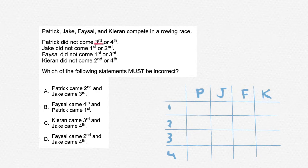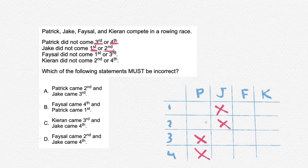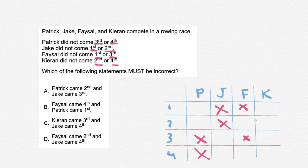Now let's start filling in our table. Patrick did not come 3rd or 4th, so let's cancel out 3rd and 4th positions for Patrick. Jake did not come 1st or 2nd, so cross out 1st and 2nd for Jake. Faisal did not come 1st or 3rd, so we cancel out the 1st and 3rd section for Faisal. Kirian did not come 2nd or 4th, so we must cancel out the 2nd and 4th position for Kirian.